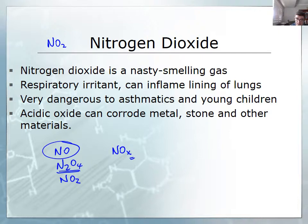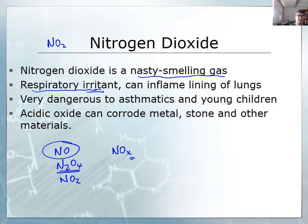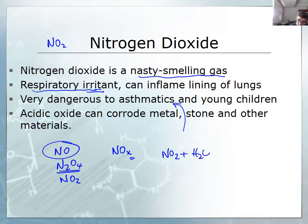Nitrogen dioxide is not a good one because it has a particularly nasty smell and, more importantly, it irritates the mucous membranes in the respiratory system, particularly inflaming the lining of the lungs. This can be a very important pollutant for asthmatics or young children if present in sufficiently high quantities in the atmosphere. It is also an acidic oxide, and we can only balance its reaction with water if we include both nitric and nitrous acid in our equation.